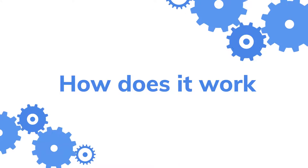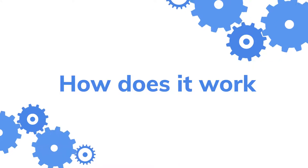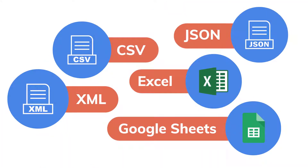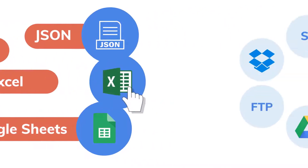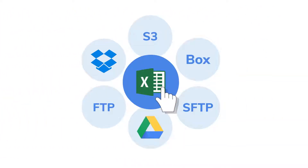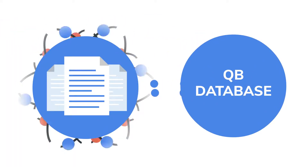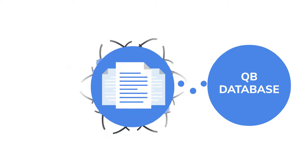So, how does it work? First, select the source containing your transactions, lists, or customers — Audimate supports all file types. Next, drag and drop your file. Third, using AI, data is mapped to a familiar QuickBooks template.